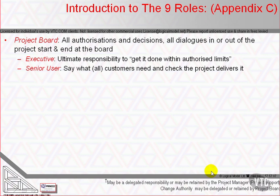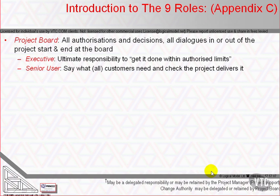The senior user, or perhaps senior users, is or are responsible for specifying the needs of those who will use the project's products, for liaison with the project management team, and for monitoring that the solution will meet the needs within the constraints of the business case in terms of quality, functionality and ease of use. The role represents the interests of all those who will use the project's products including operations and maintenance, those for whom the products will achieve an objective, or those who will use the products to deliver the benefits. The senior user role commits user resources and monitors the products against requirements. The role may require more than one person to cover all user interests but should not be split between too many people.